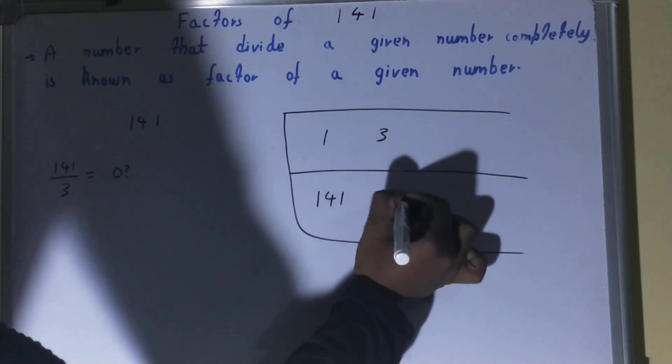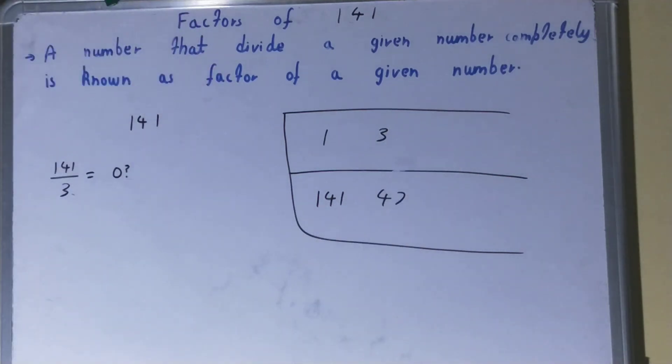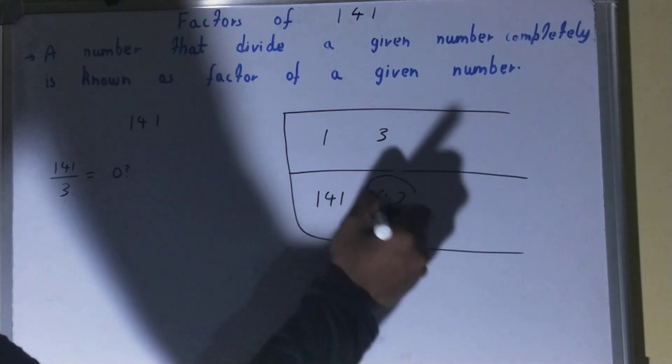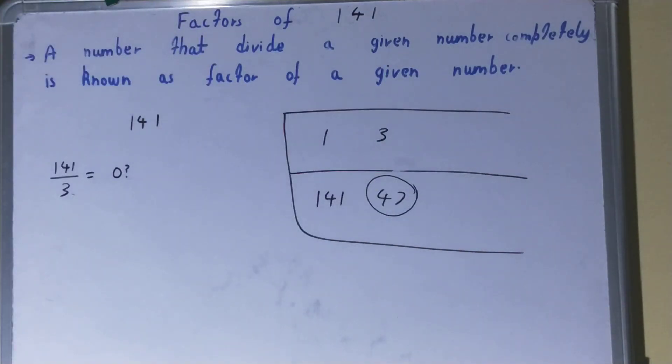Now one thing you need to see very carefully over here. In the second row or in the last row, you have got a prime number over here. So whenever you spot a prime number in the second row or in the last row, your work is done. Then in there only you don't need to check any further, and the set of factors for the number 141 will be 1, 3, 47, and 141.